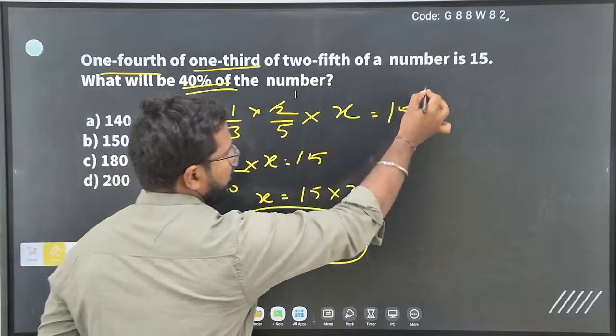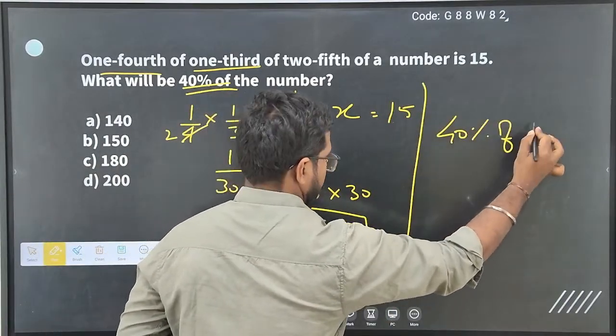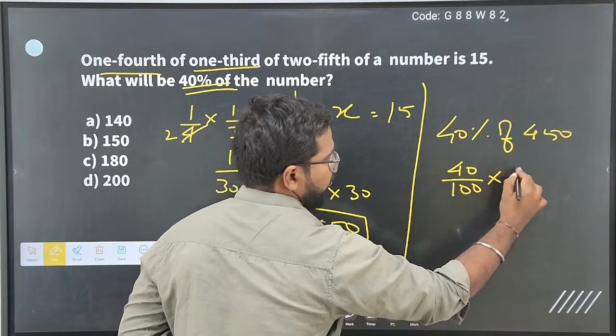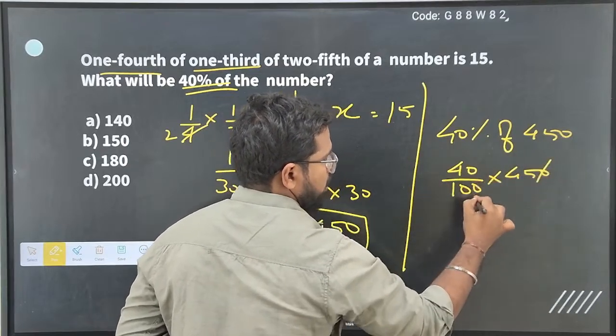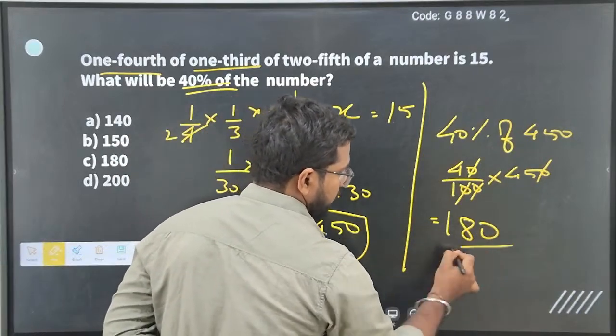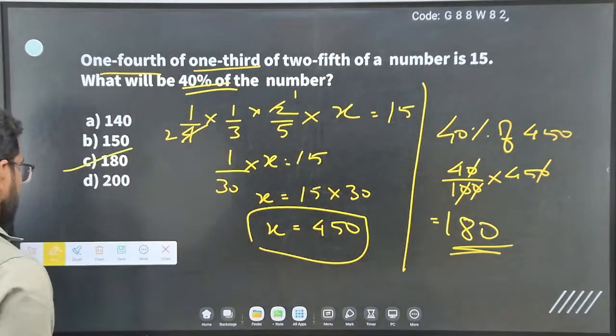But the question asks: find the forty percent of the number. So forty percentage of four fifty, which is forty by hundred into four fifty. So zero, zero, zero, zero. Four into forty-five, which is hundred and eighty. Very good answering, yes. We will go to the next question.